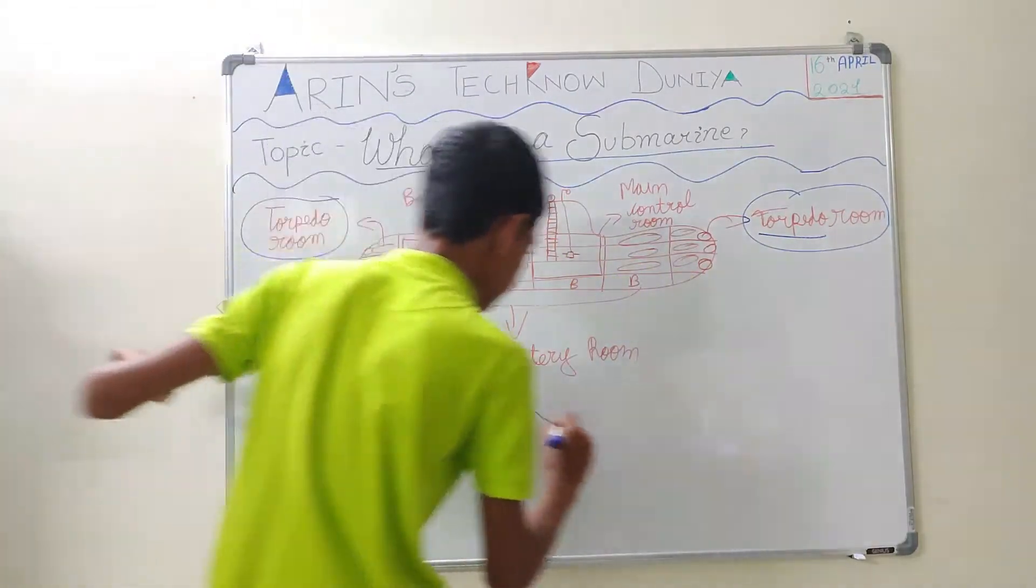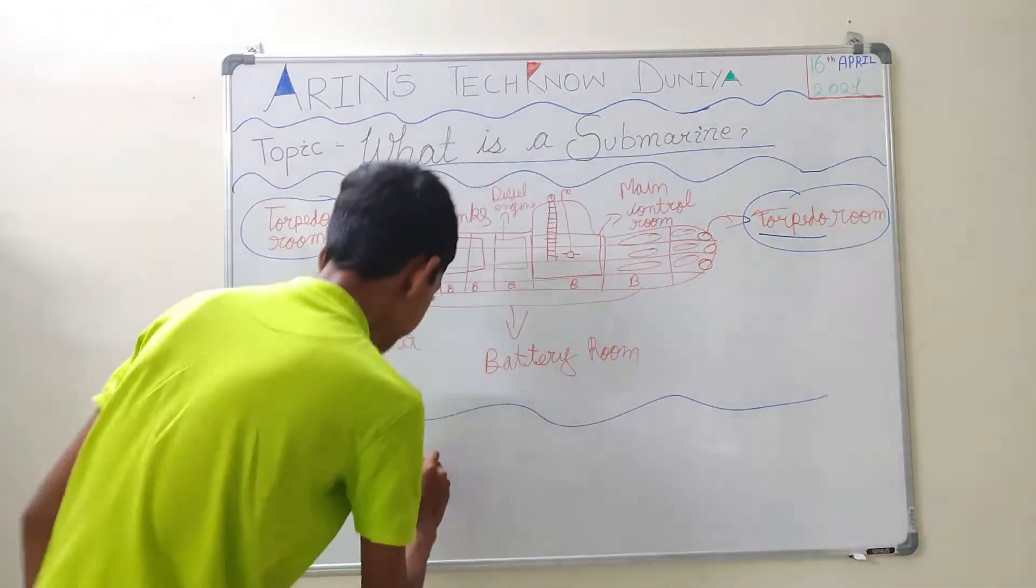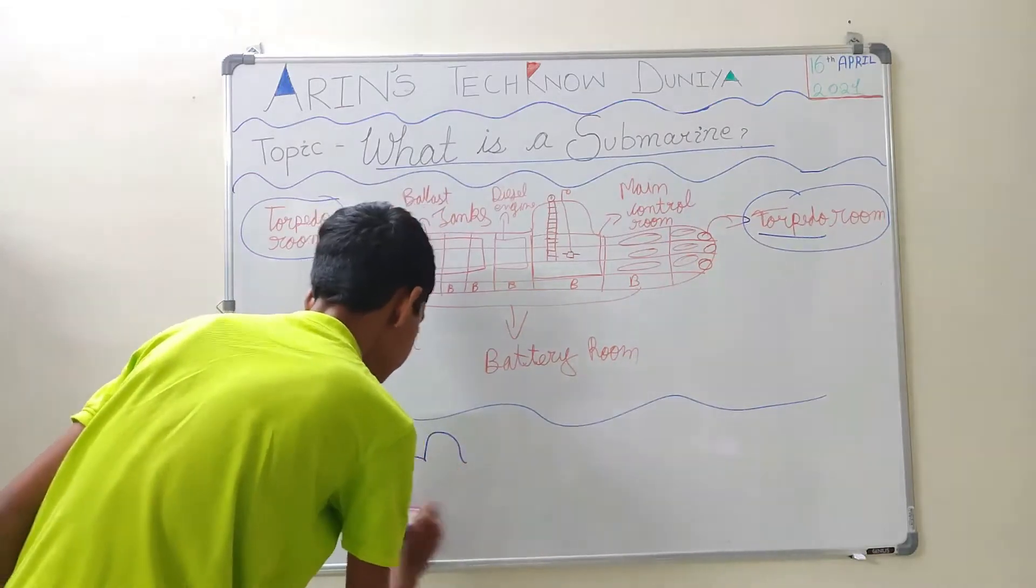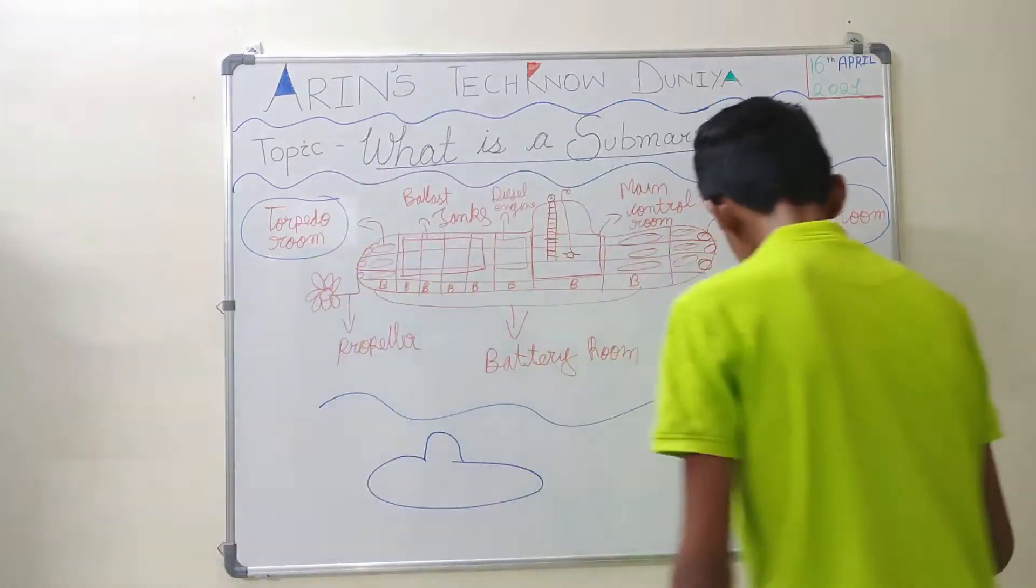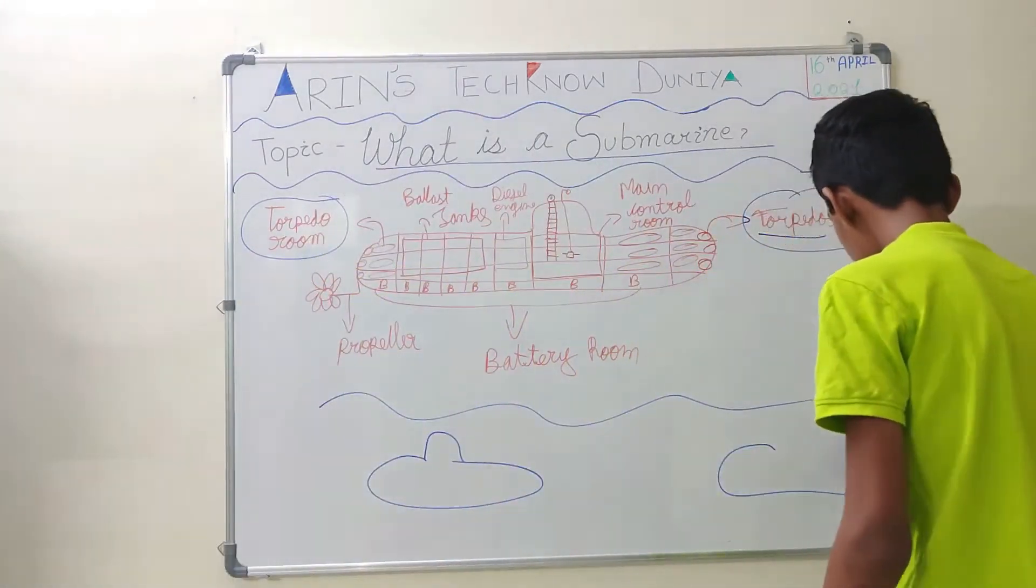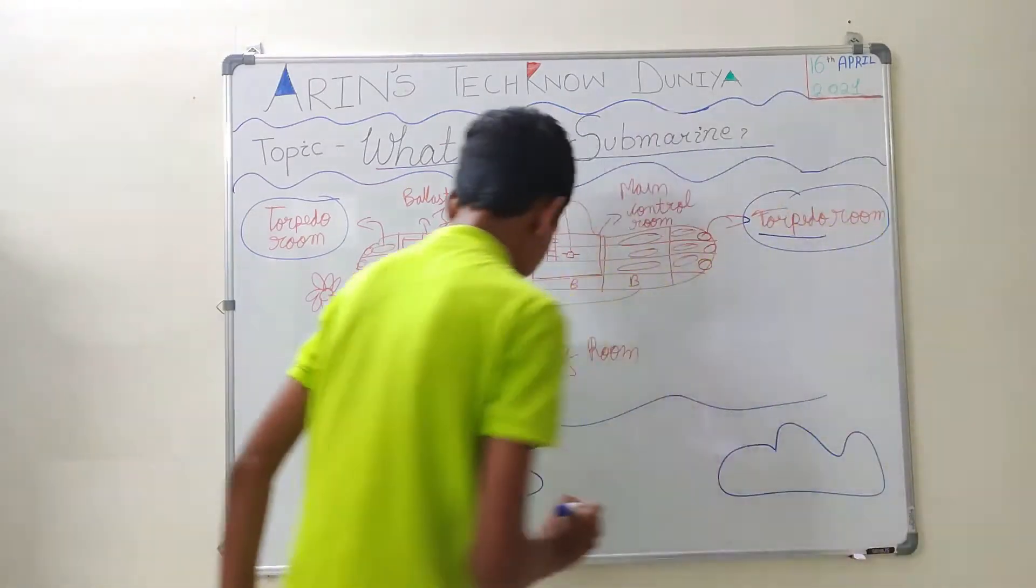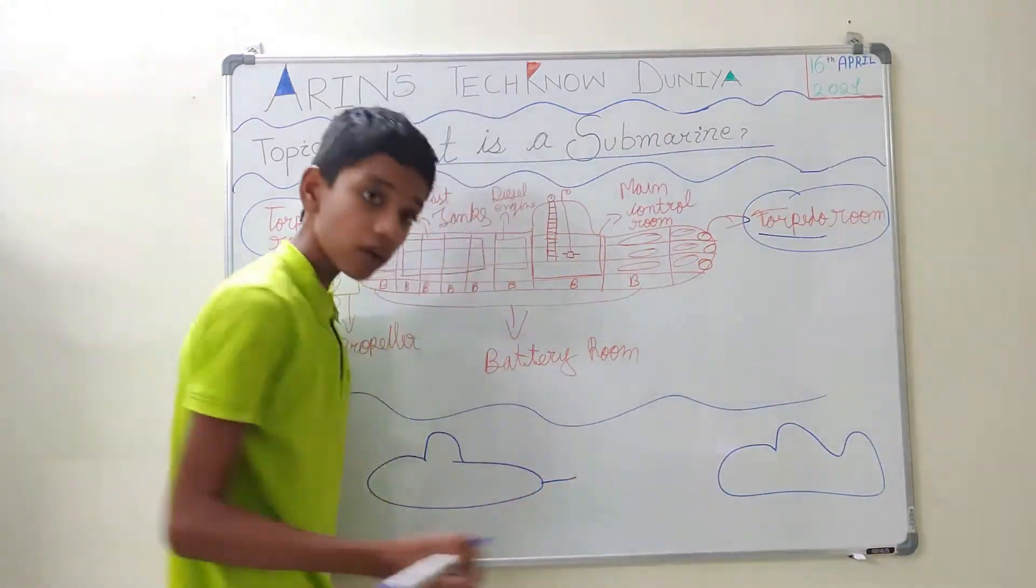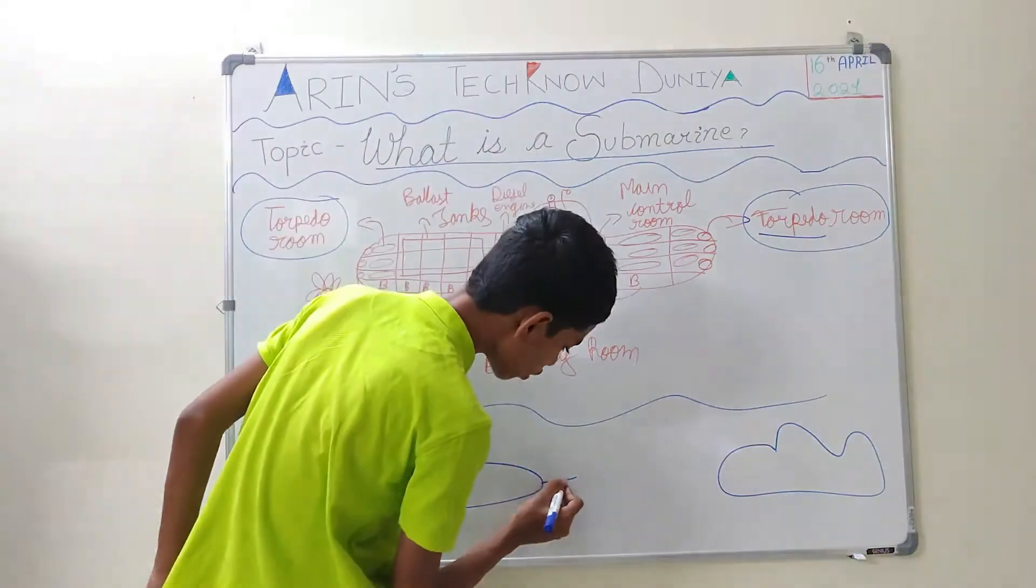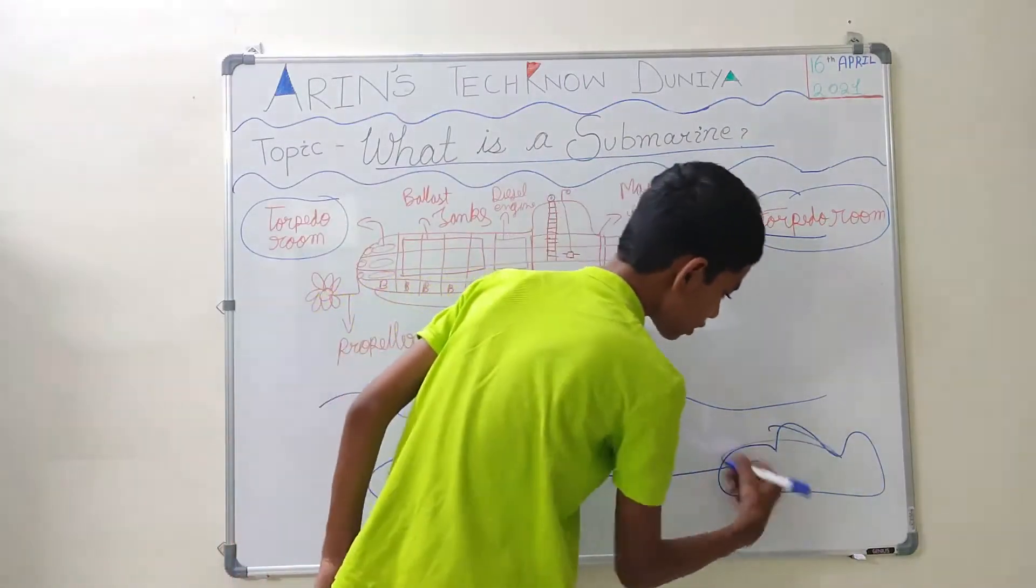If we think that this is the sea, here is the main submarine and here is the submarine which is the target. It will launch a torpedo which is an underwater missile. It will go and then it will destroy the submarine.